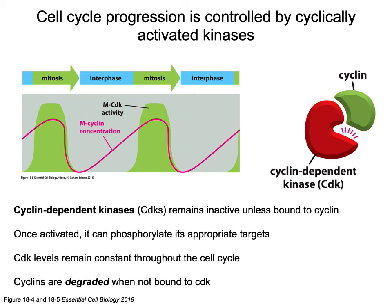Cyclins themselves will actually be degraded when not bound to the cyclin-dependent kinases, so cyclins change in amount. If a cell is looking to initiate mitosis, it's going to have to produce M-cyclin. So there's regulation of how much cyclin is present, regulation of kinase activation, and also regulation of phosphorylation of targets. This multi-level regulation ensures the cell cycle isn't progressing unless all signals say go.